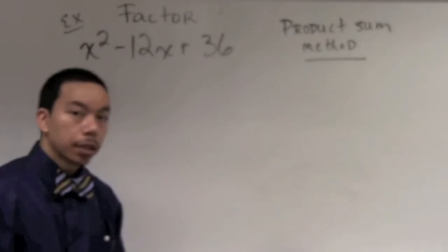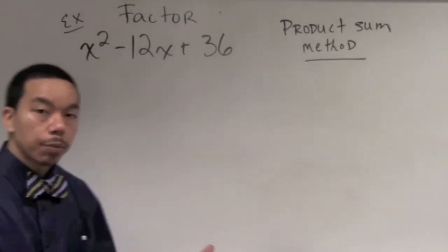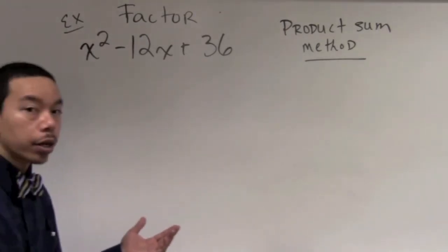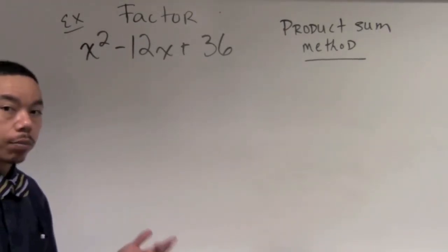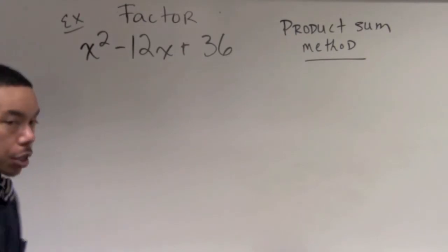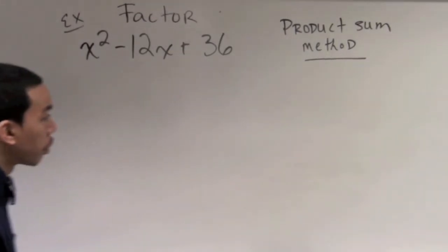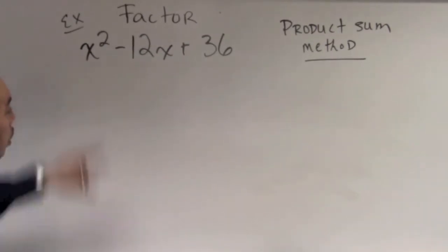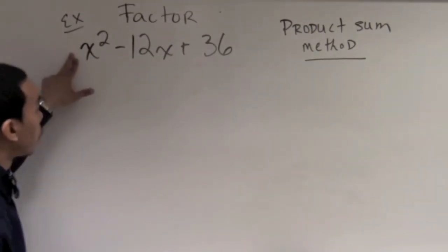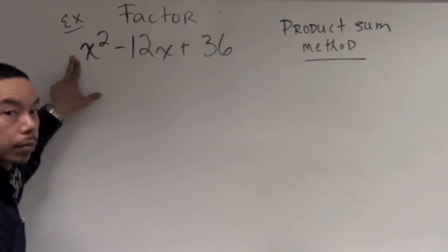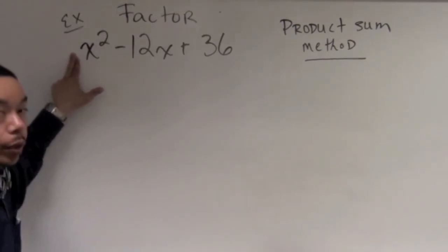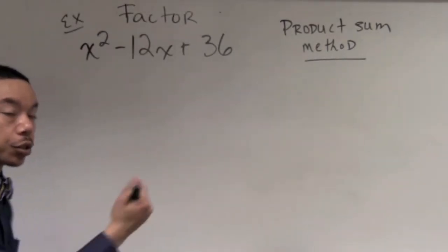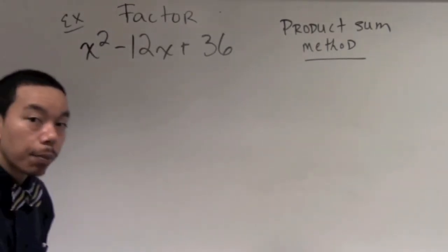Let's move on to the next example. Factor the polynomial x squared minus 12x plus 36. Before we factor, we look at the leading coefficient in the x squared term. Here the leading coefficient is a 1 — we don't see anything in front of the x squared, so it's implied to be a 1. Therefore we can use our product-sum method.